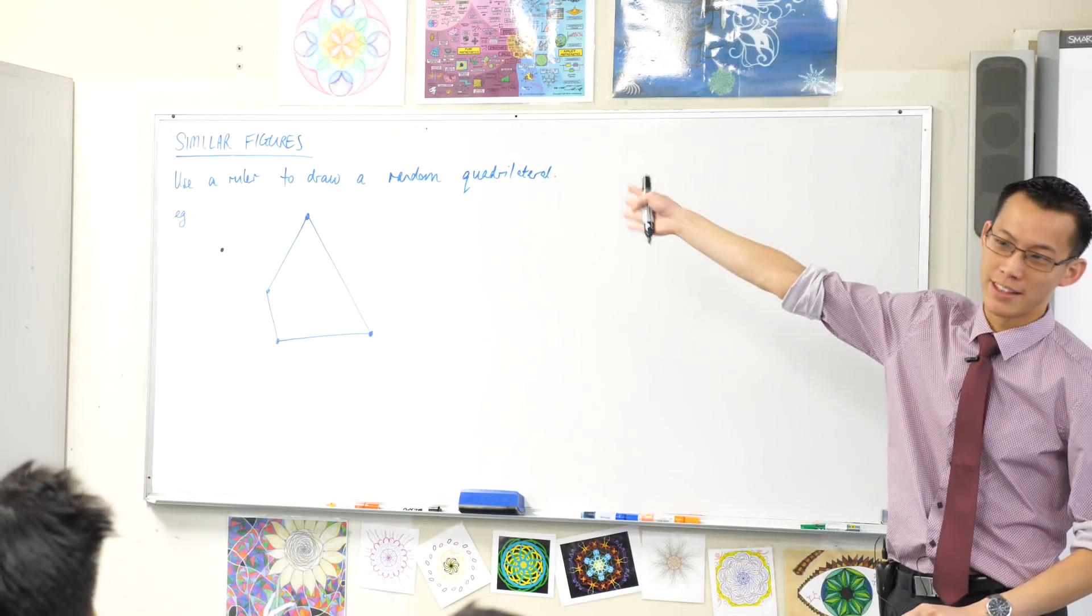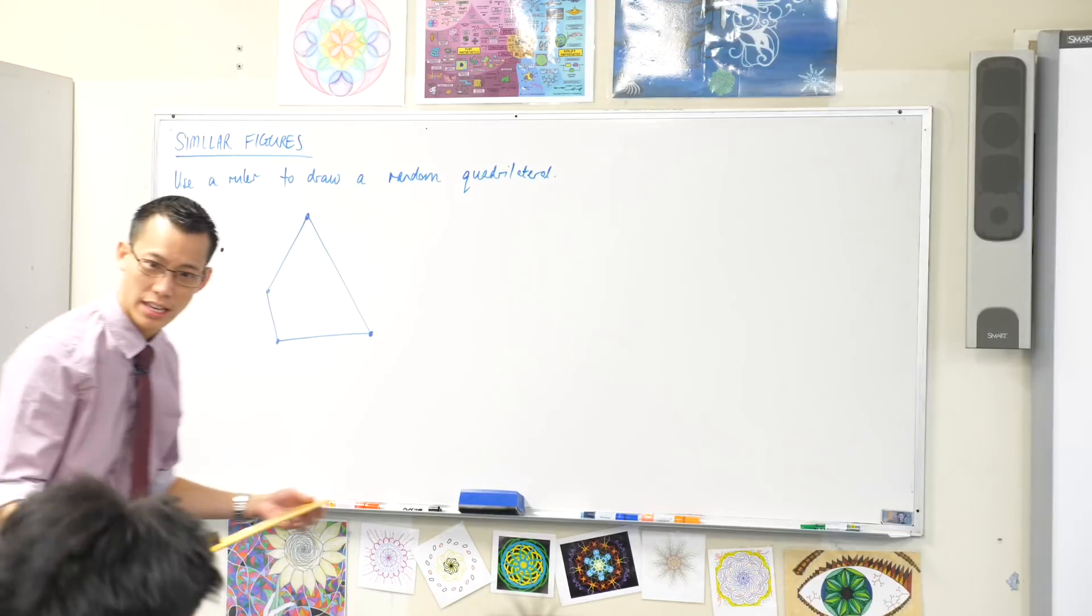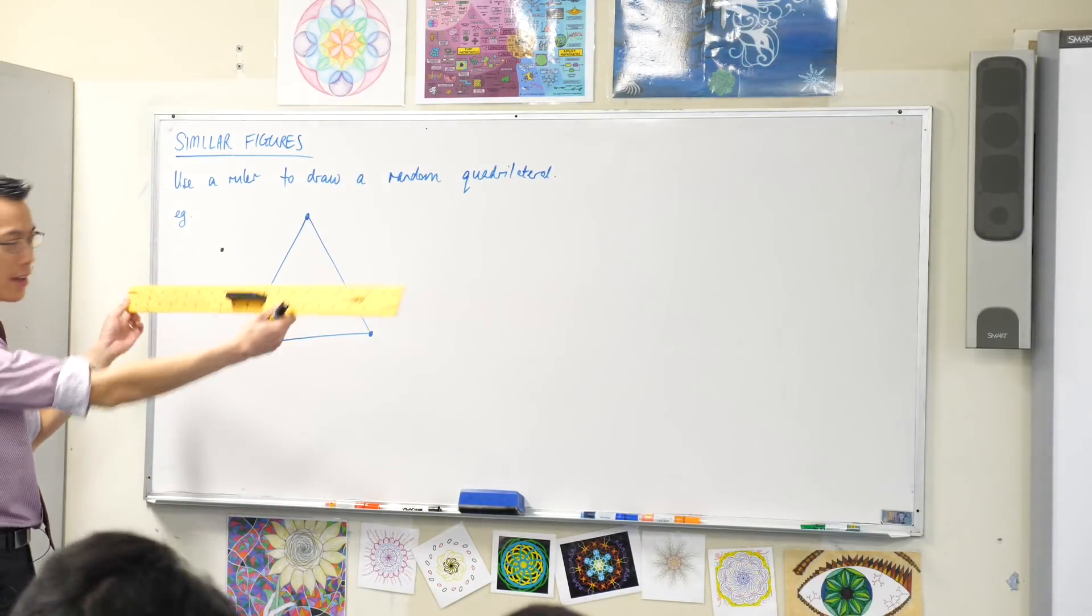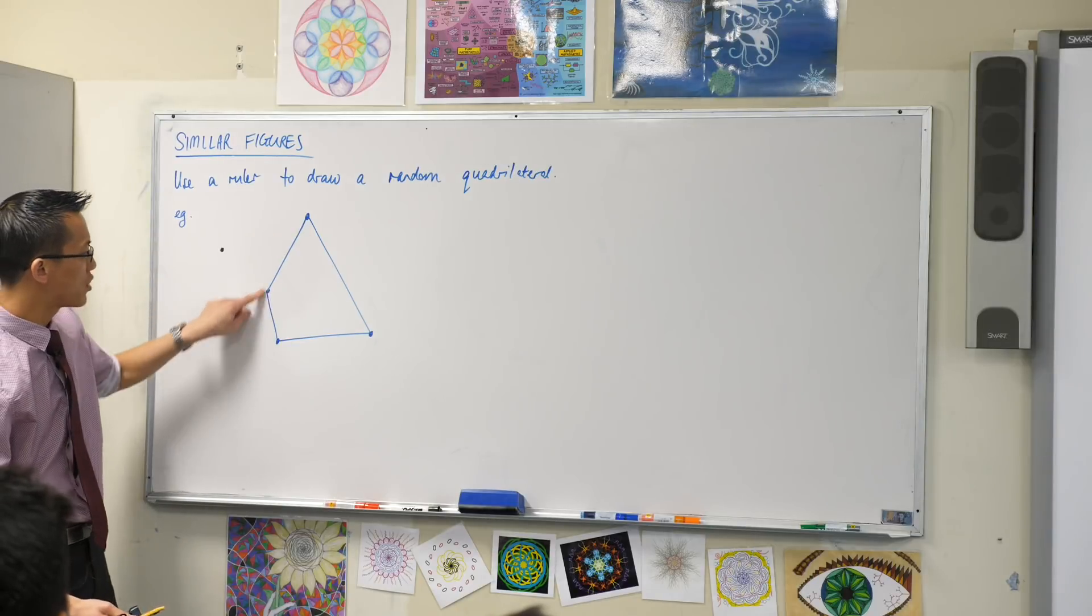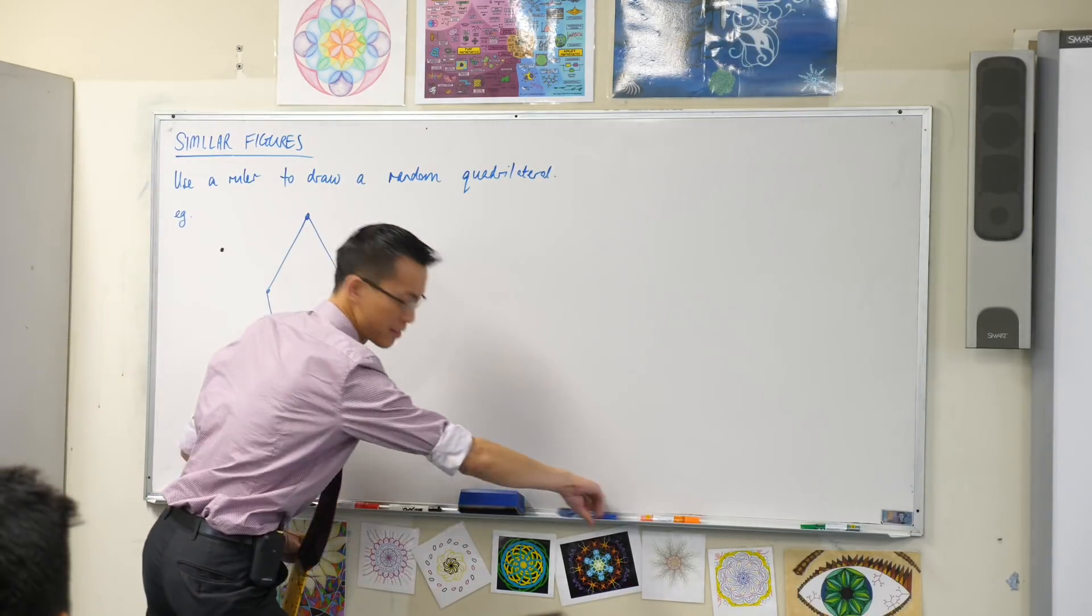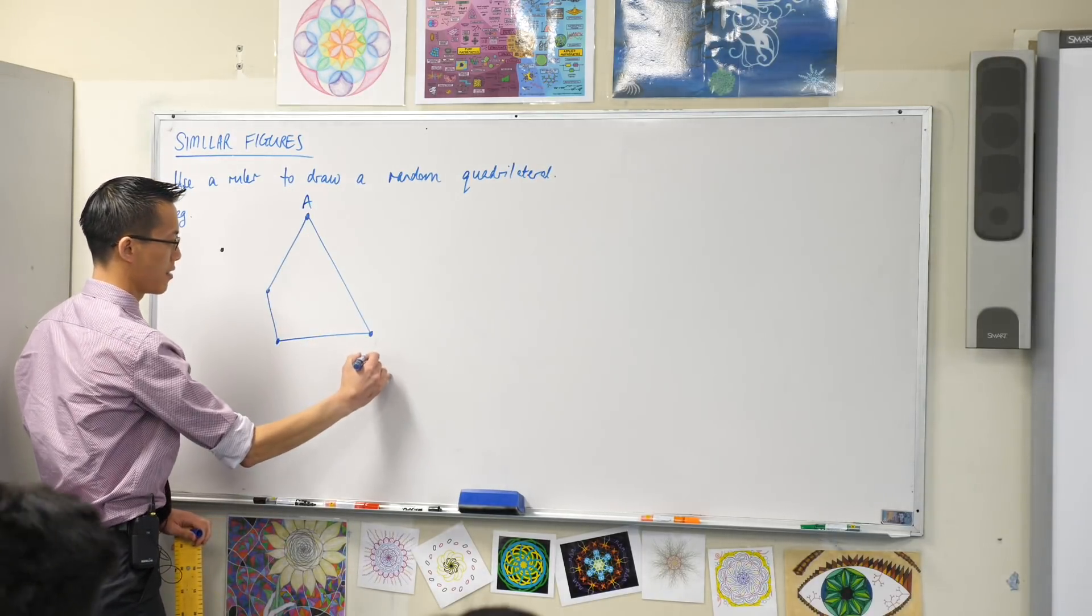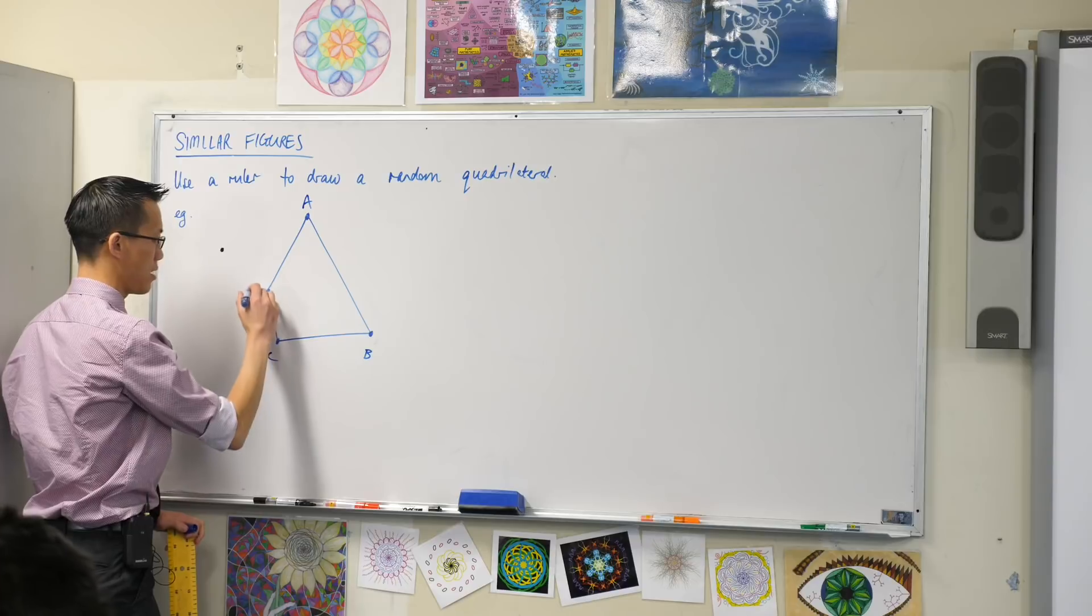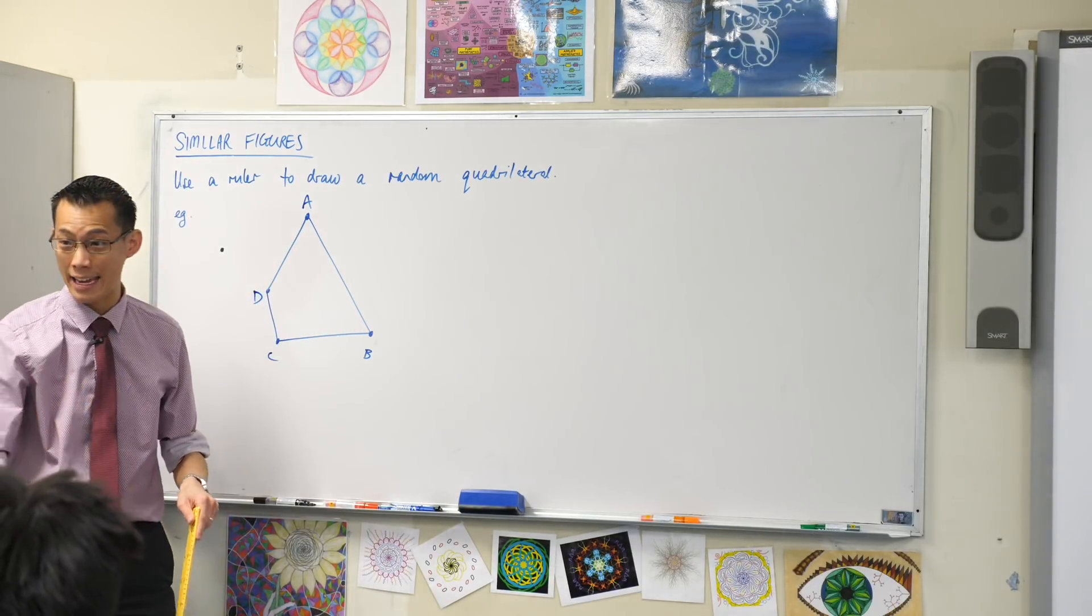Now what I want you to do with your ruler is, watch this carefully. You've got one, two, three, four points here. Let's just name them. Let's call them ABCD. A, B, C, and D.